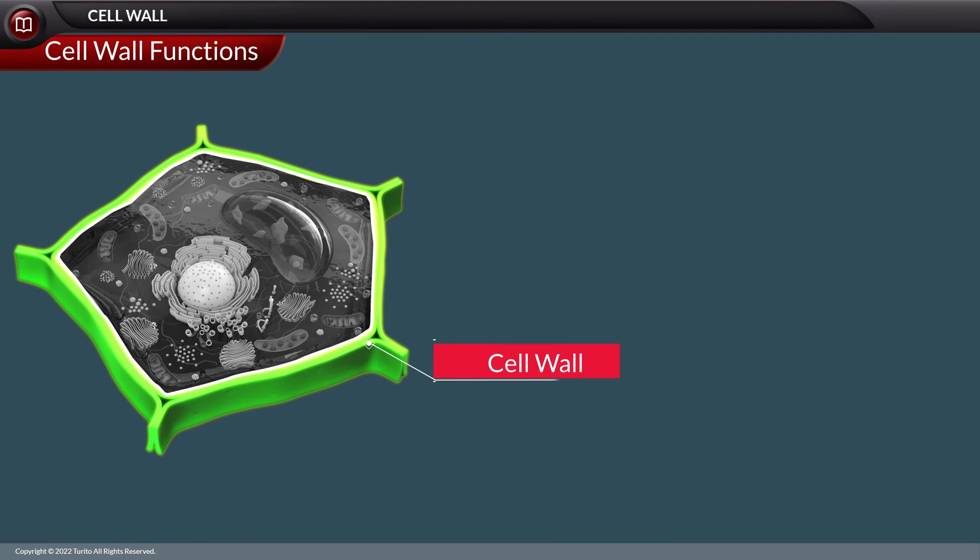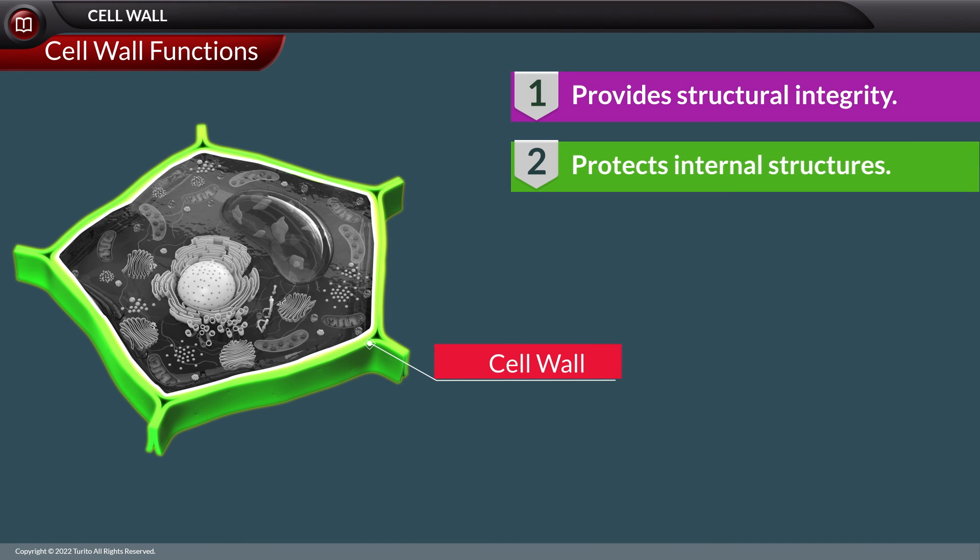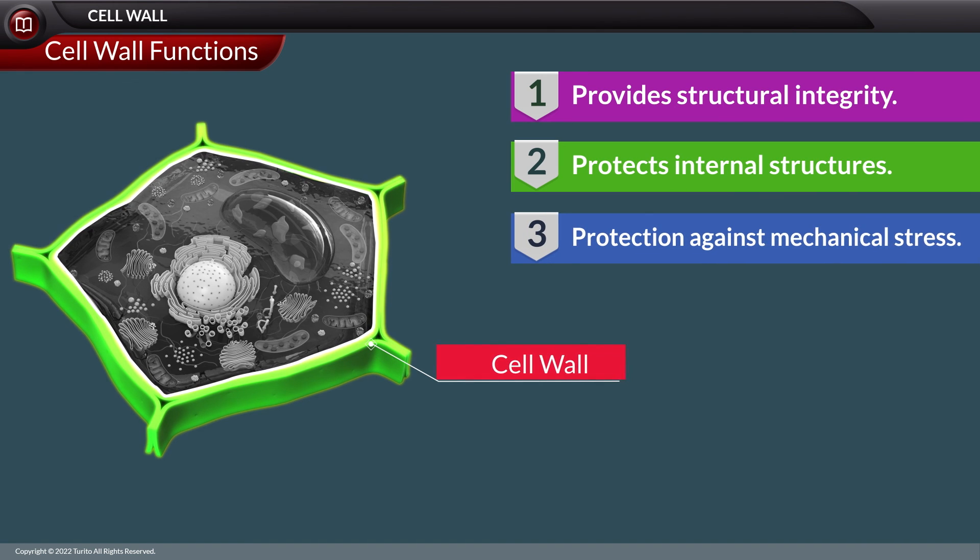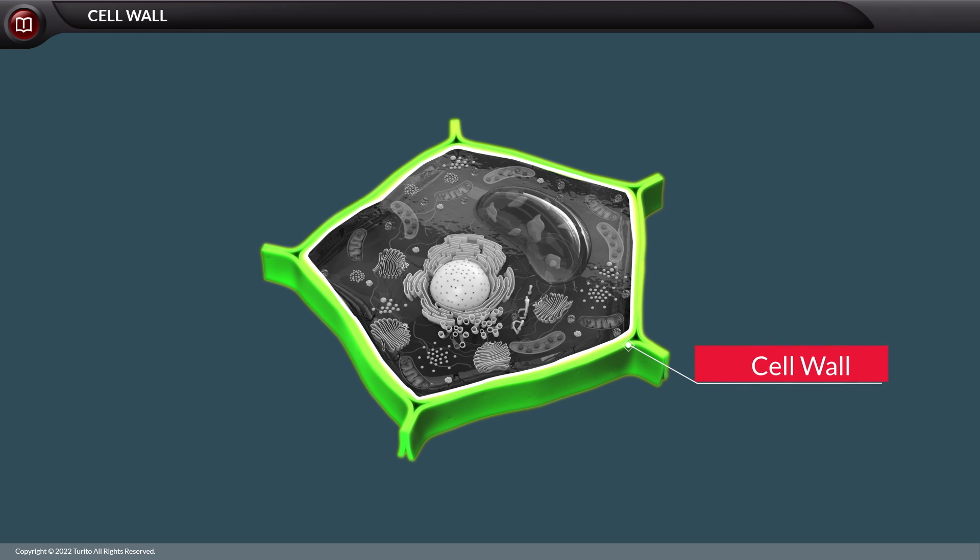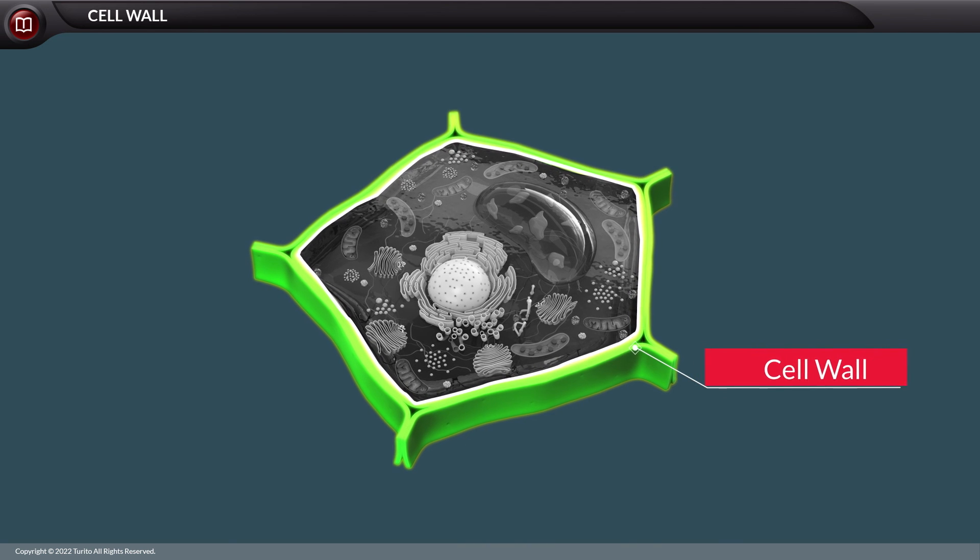Functionally, the cell wall provides structural integrity to the cell. It protects the internal structures from mechanical stress. These are the structural and functional details of the cell wall.